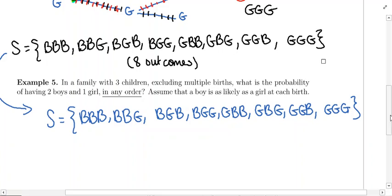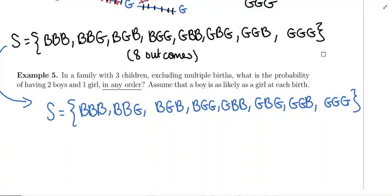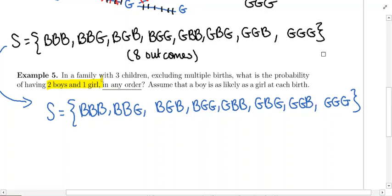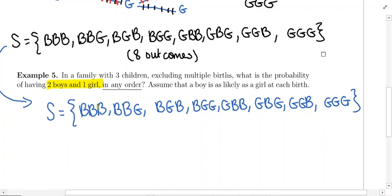When you did the sample space, you took into account that birth order mattered — now it doesn't matter. We're going to take our sample space and look for two boys and one girl. Since the order doesn't matter, we're going to pick out all the ones that just have two boys and one girl. So this one's got three boys; this one fits the bill — two boys and one girl. This one is two boys and one girl. Then this one's two girls, this is two boys and one girl, two girls, two girls, three girls.